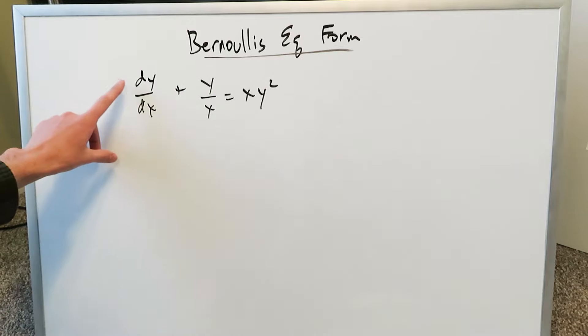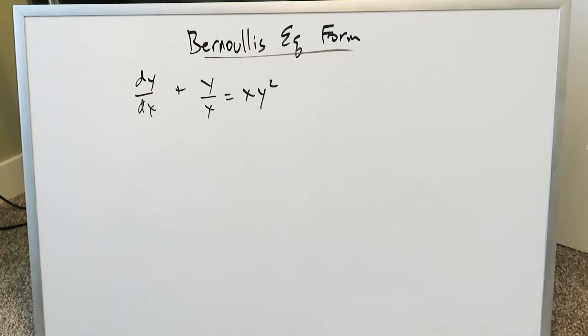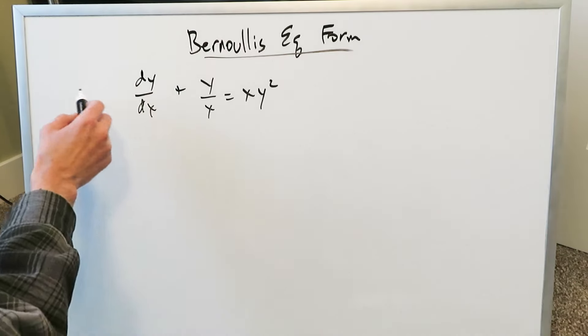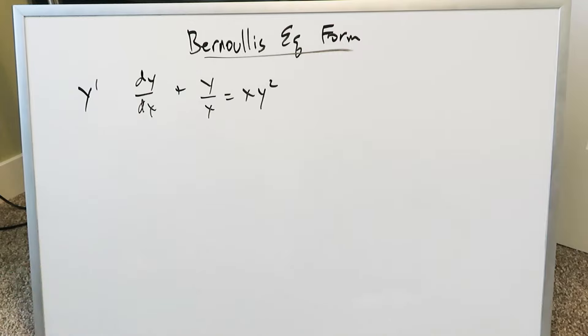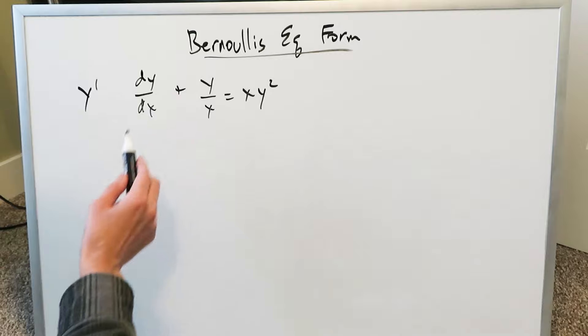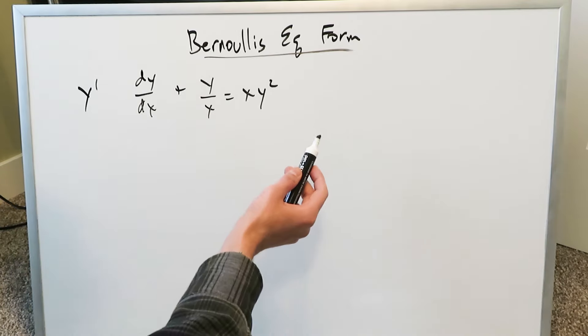First order — dy over dx represents the first order, also written synonymously as y prime. Our equation is dy over dx plus y over x is equal to xy squared. It's a Bernoulli's form.